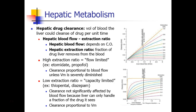However, there are other factors. The hepatic extraction ratio describes how much of a drug the liver is able to remove from the blood as the blood passes through the liver. Some drugs have a very high extraction ratio, meaning the liver does a very efficient job of taking drug out of the blood and metabolizing it. Other drugs have a very low hepatic extraction ratio, meaning the drug is not very efficiently metabolized as the bloodstream passes through the liver.